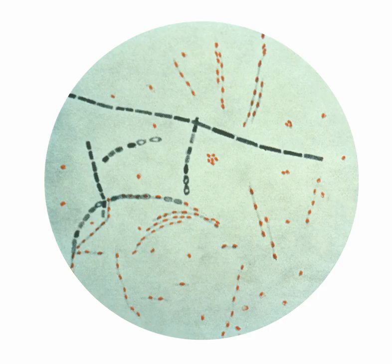Letters containing anthrax spores were mailed to several news media offices and two Democratic U.S. senators, killing five people and infecting 17 others.